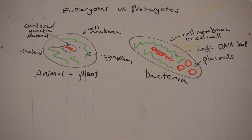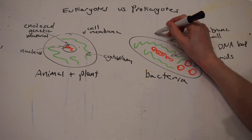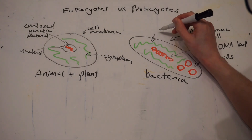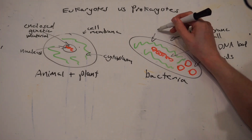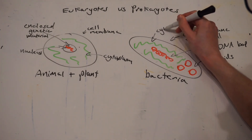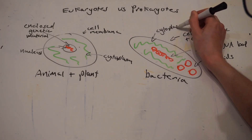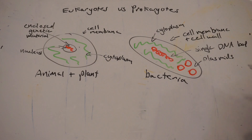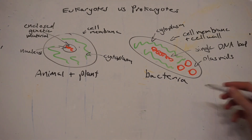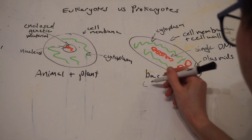So those are the two types of cells and a rough overview of what you need to know. You need to know the basic differences between animal and plant cells and also the differences between prokaryotic and eukaryotic cells in general.